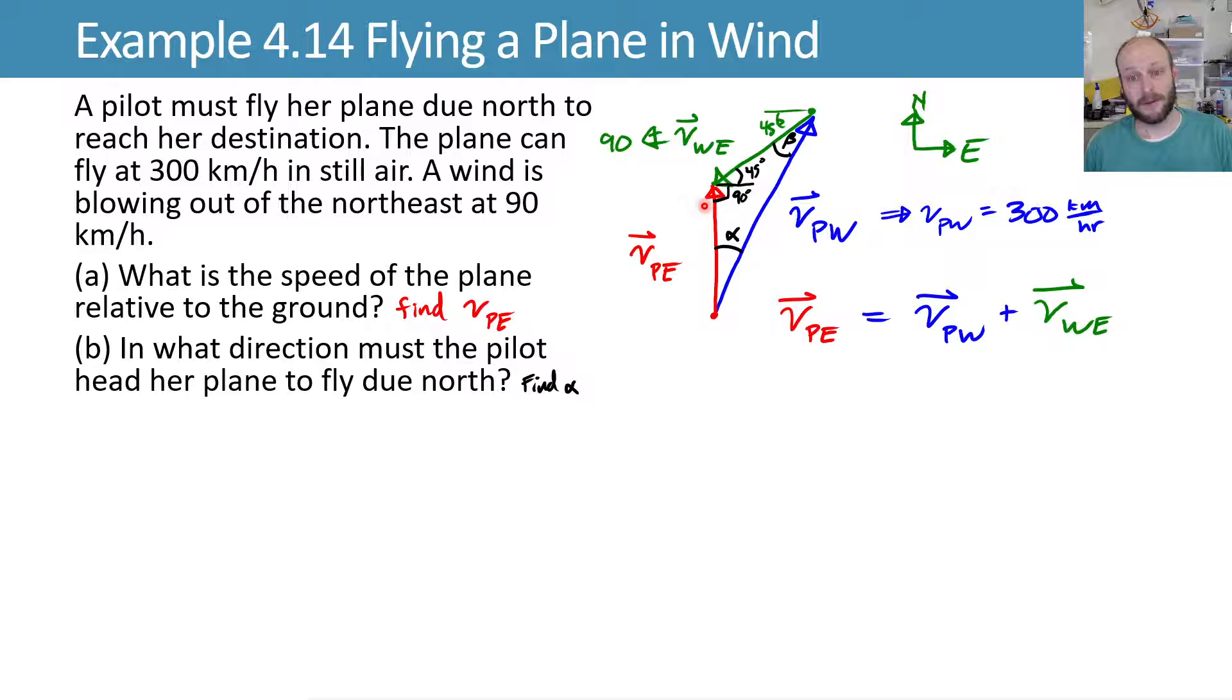Now it's a math problem. That's the setup. Now we need to solve for VPE, the length of this side of the triangle. We also need to solve for alpha, the angle inside the triangle. There are a few different ways to do that, and I'll show you a couple. We'll start with law of sines.